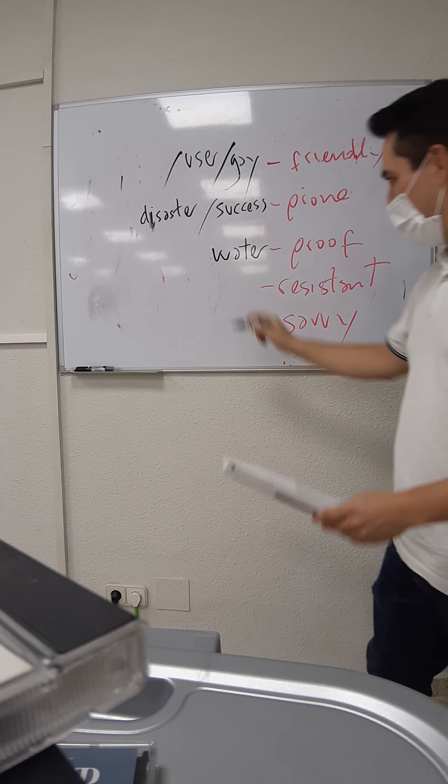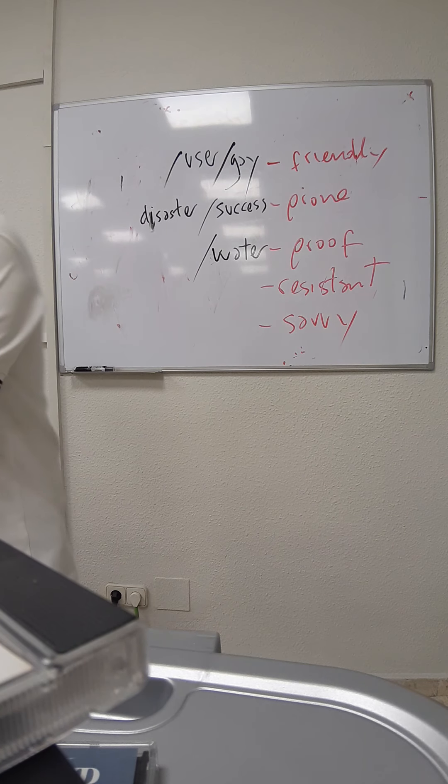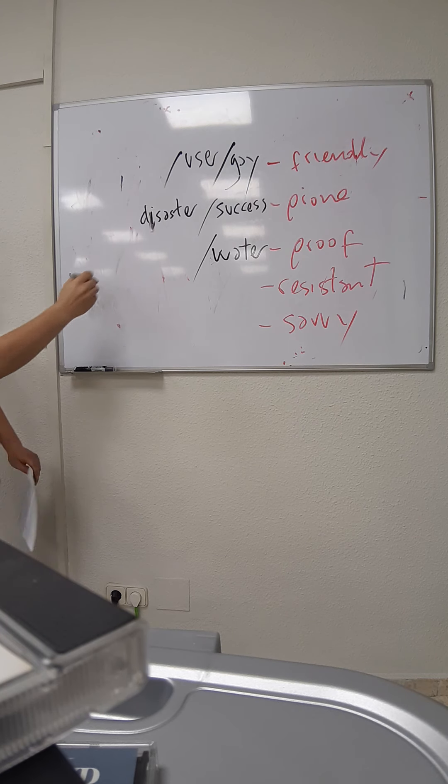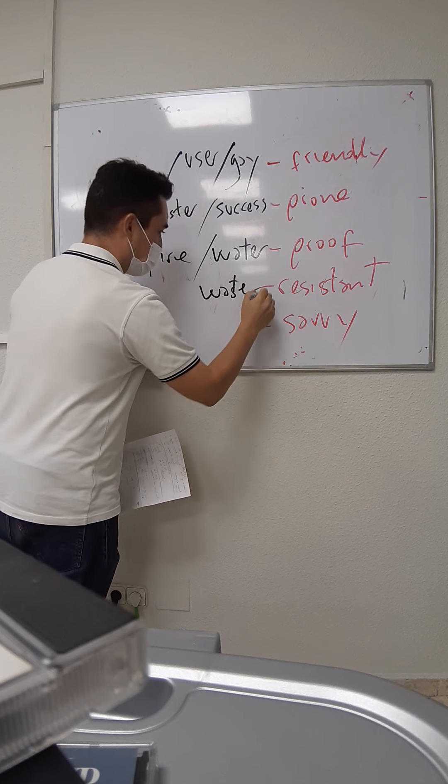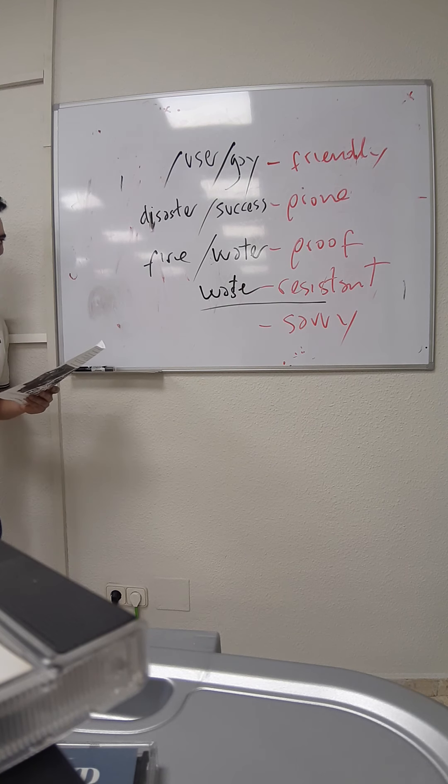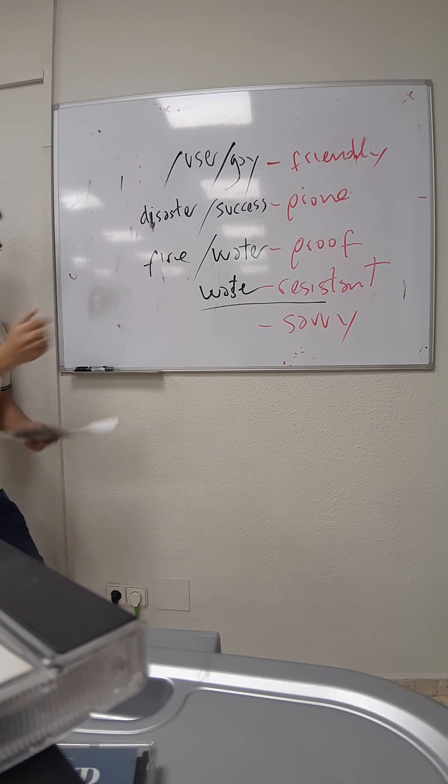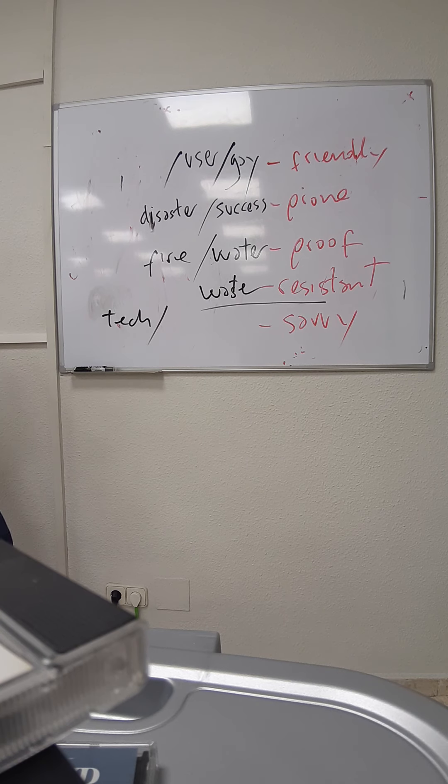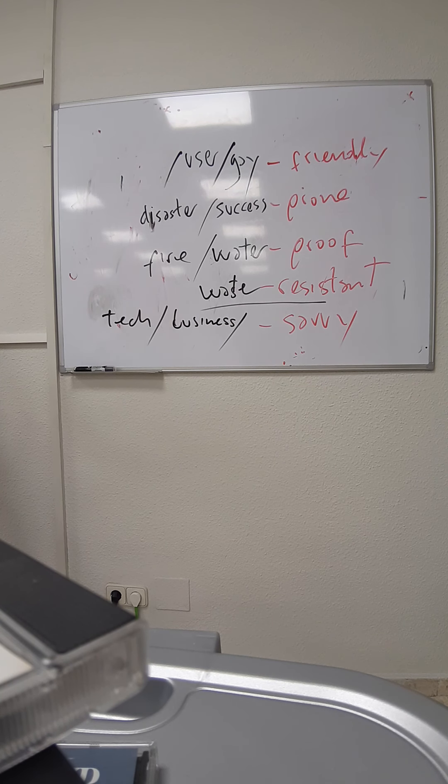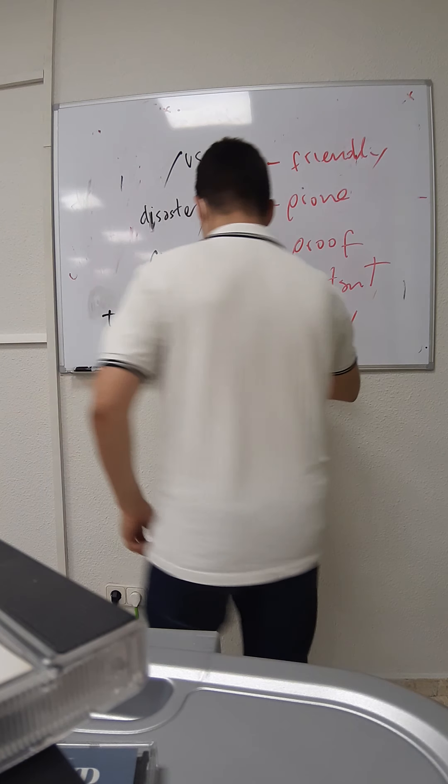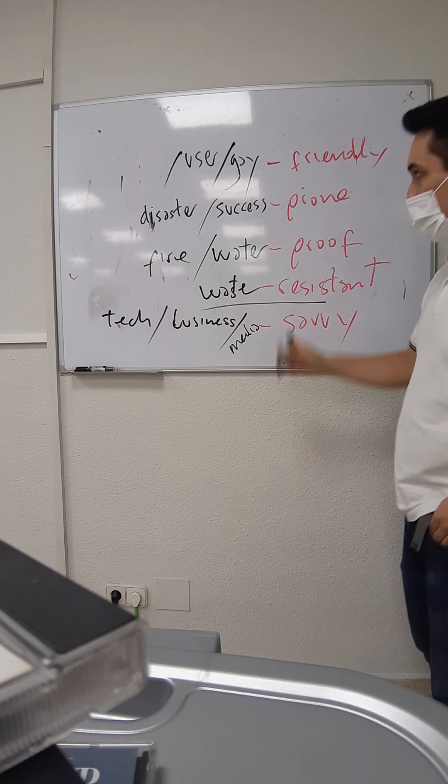Proof. If you buy a camera, a GoPro camera, you can put it under the water, so it is waterproof. If you buy some special clothes, firefighters have special clothes, those clothes are fireproof. Something can also be water resistant. Savvy, we said tech savvy. A person can be tech savvy. If a person is very good at business, that person is business savvy. If a person is very good at, for example, social media, you would say that person is media savvy.